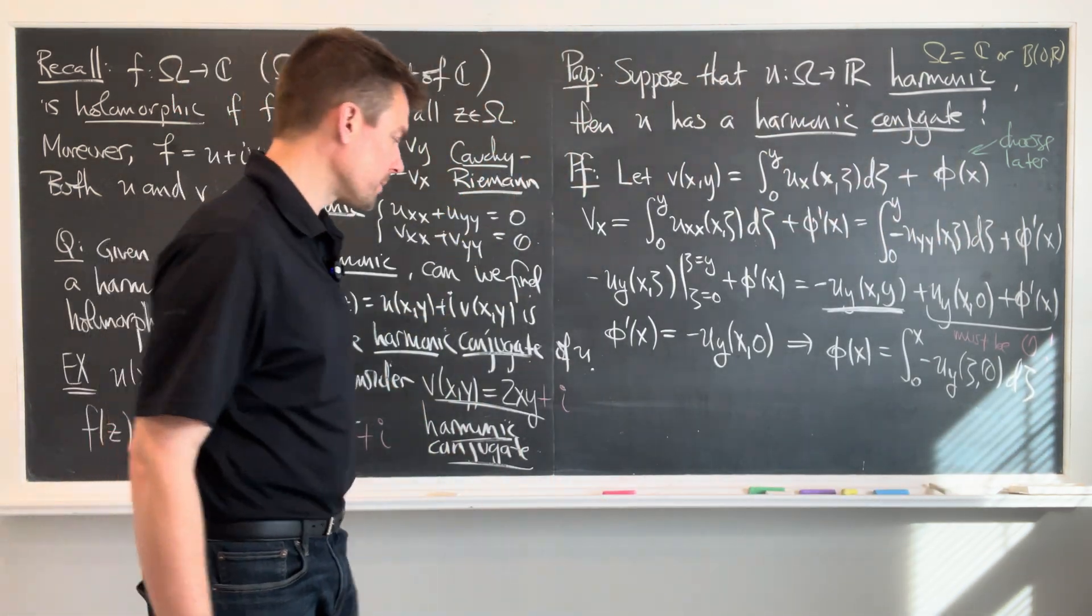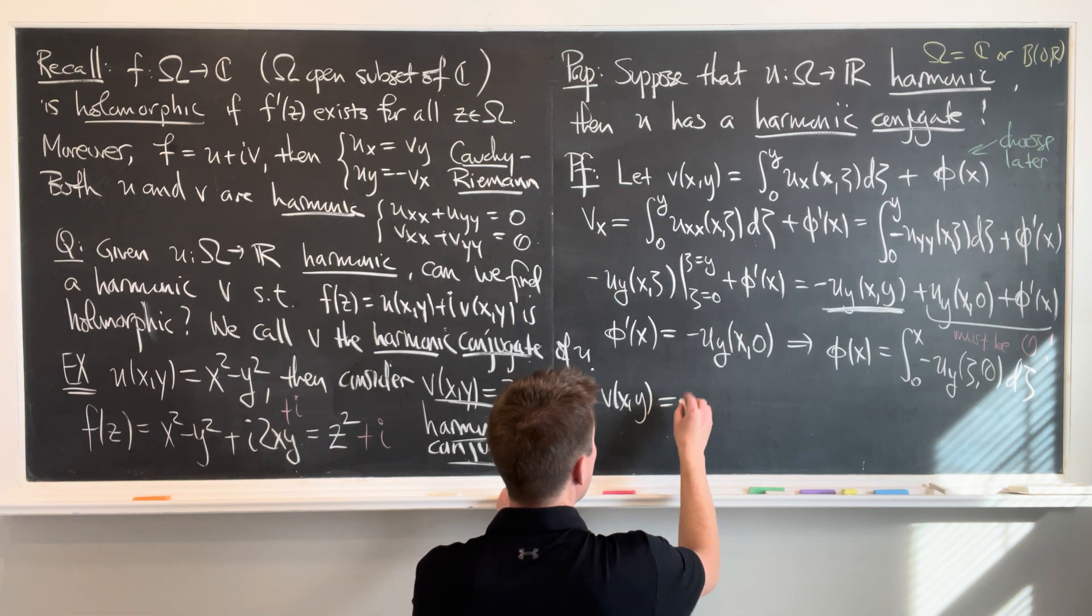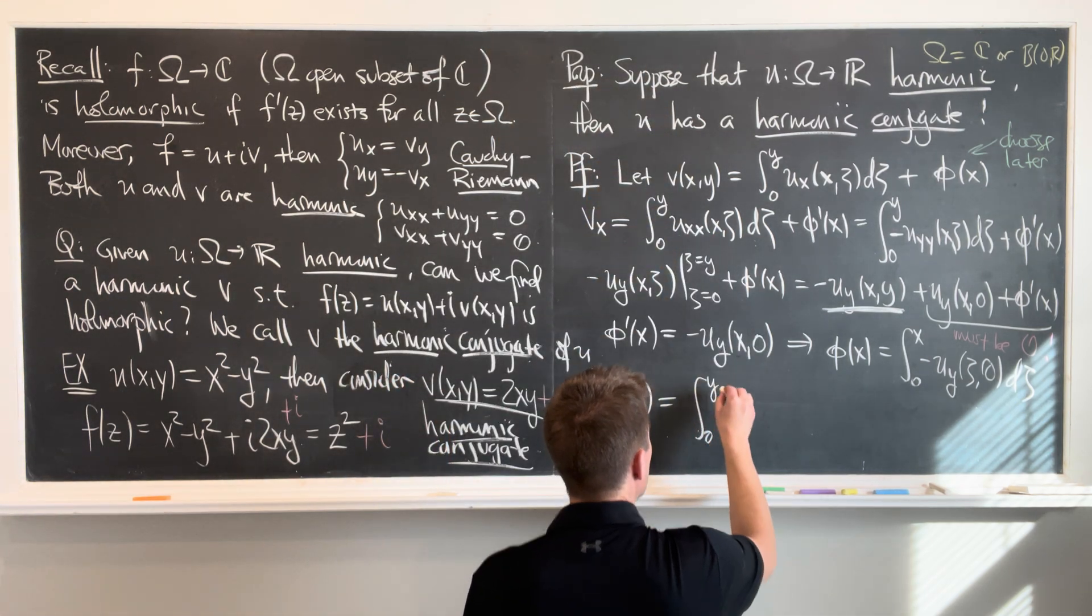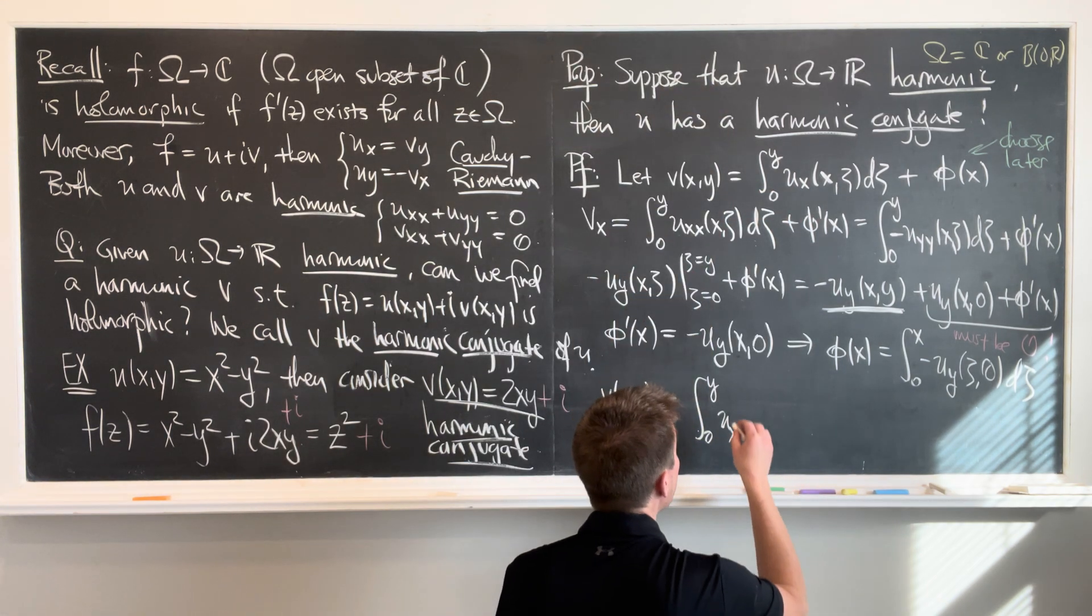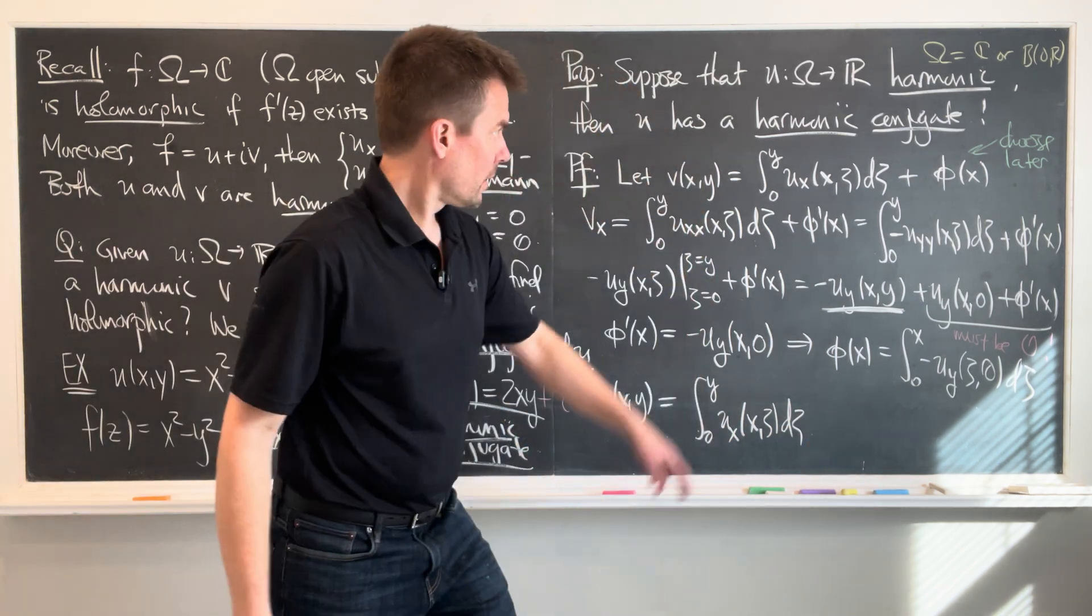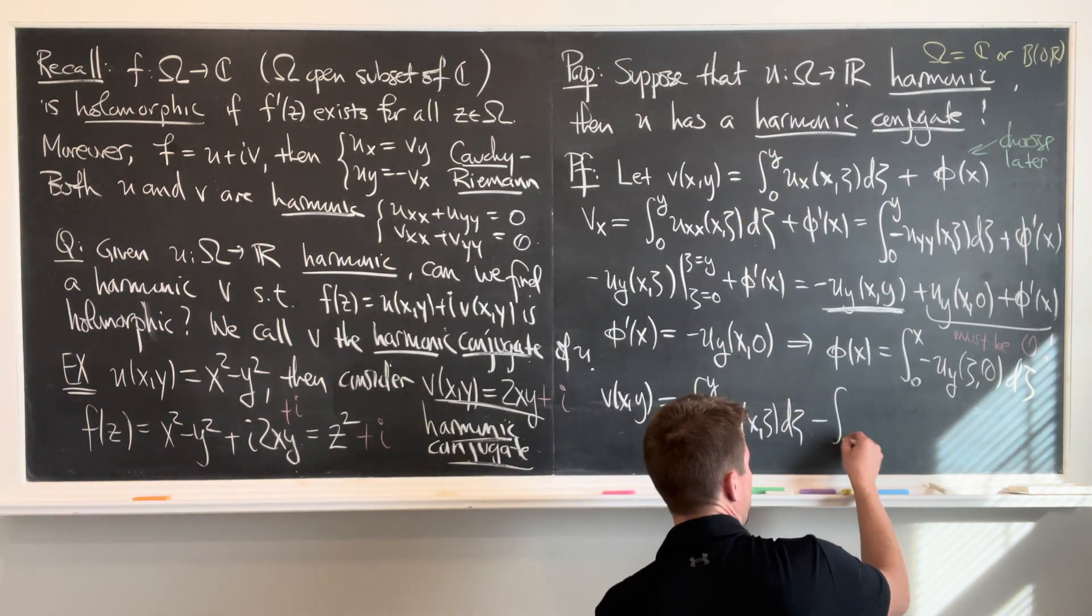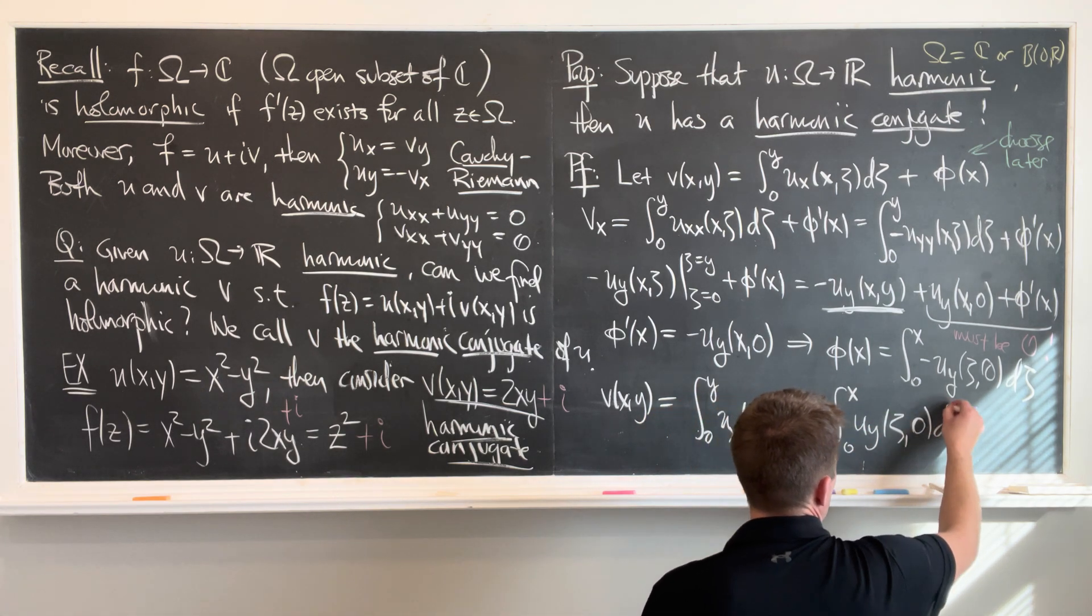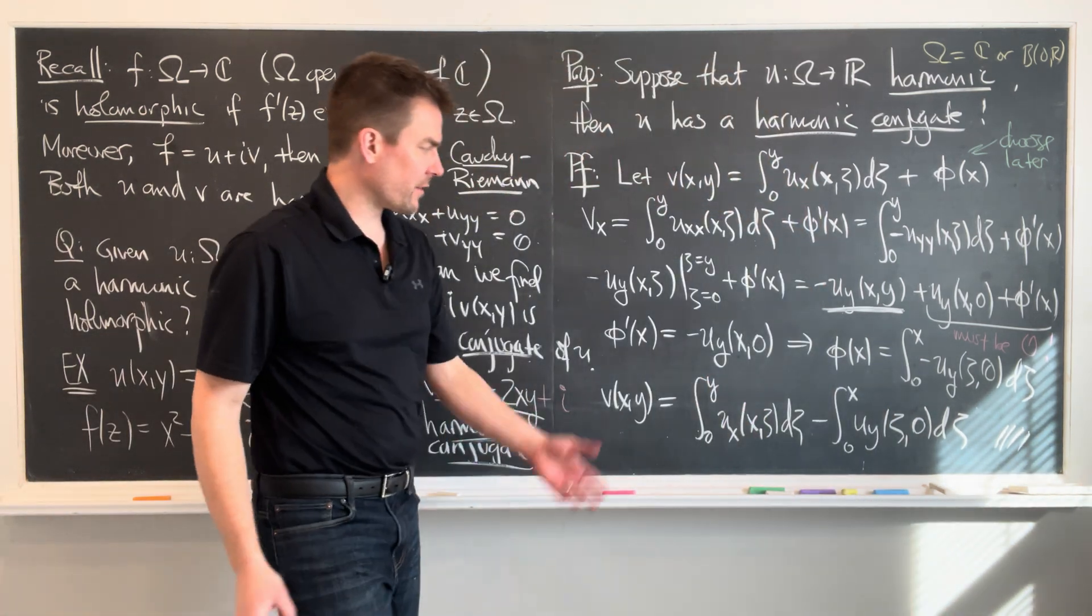So hence, what's v going to be? So hence v, your harmonic conjugate, v of x, y is going to be the integral from zero to y of ux x zeta d zeta, and then plus phi, which is minus the integral from zero to x of uy zeta zero d zeta. QED, we got it. And so in particular, I have this really nice formula.